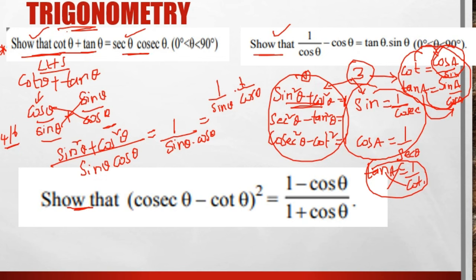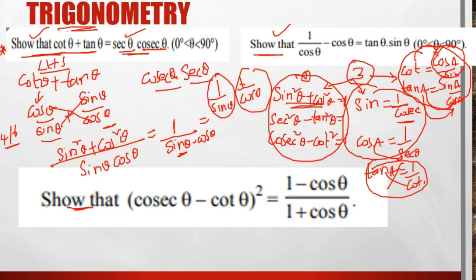Separate 1/(sin θ·cos θ) as (1/sin θ)·(1/cos θ). The numerator 1/sin θ is the reciprocal, which equals cosec θ. And 1/cos θ is the reciprocal, which equals sec θ. So LHS = cosec θ · sec θ, which is the RHS. Hence proved.